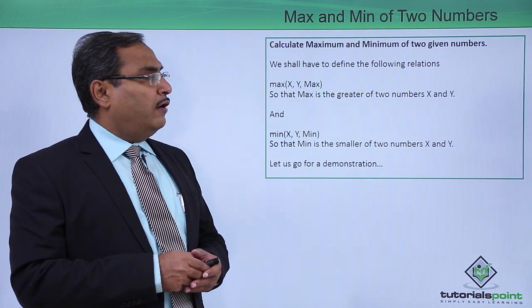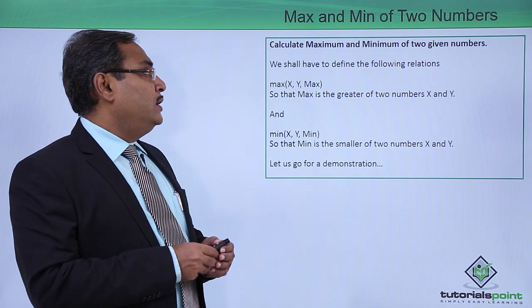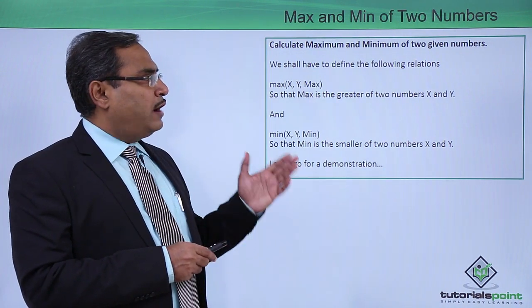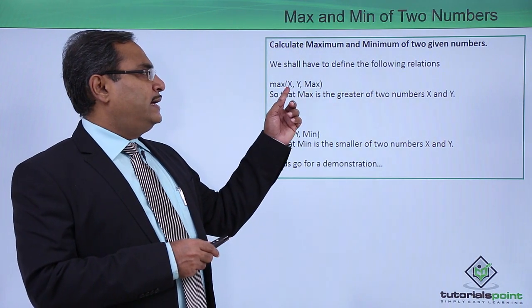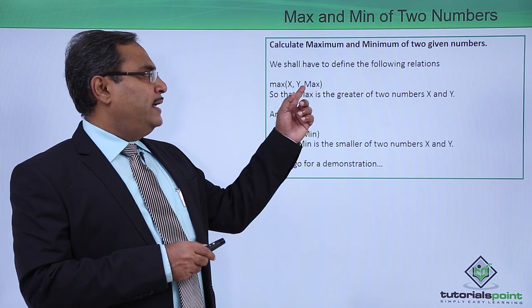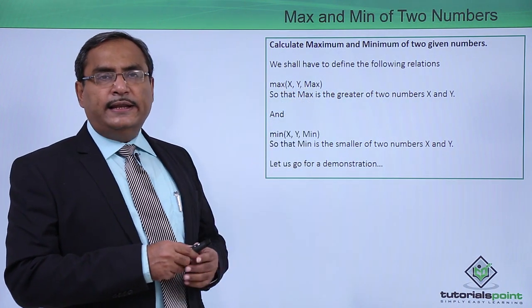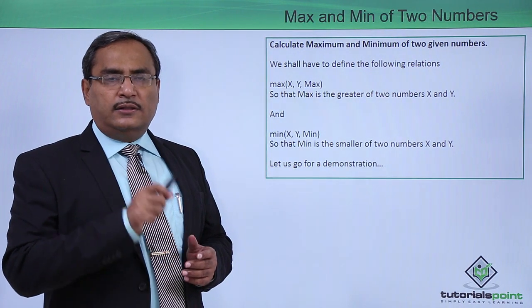Calculate maximum and minimum of two given numbers. That is a problem for us. Here we are supposed to define the following relations like max(X, Y, Max). Here you see X, Y and Max, they are in capital letters. That means X, Y and Max are three variables. This max is nothing but one predicate which will have three arguments.